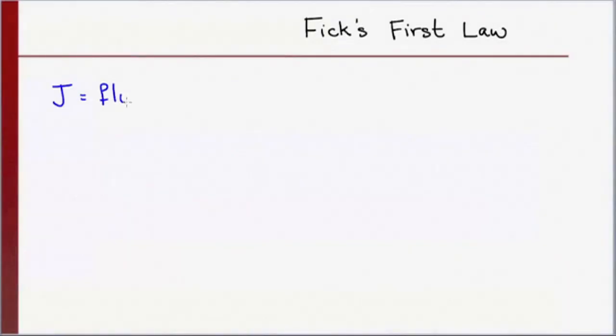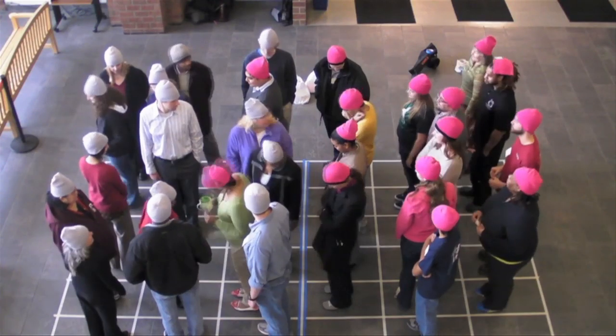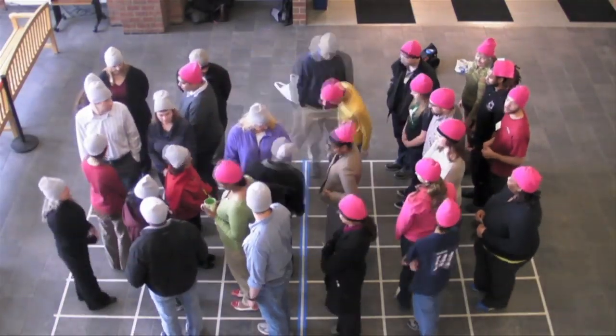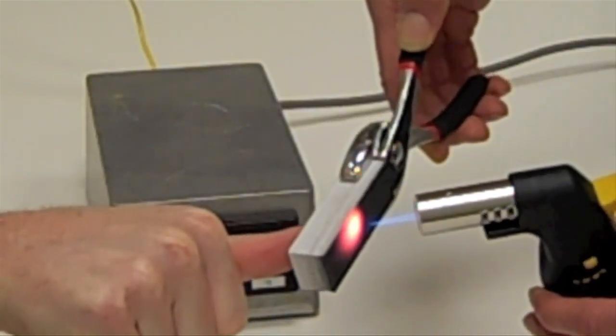Be aware that this is just one form of Fick's first law. The most general form says that flux is proportional to the negative gradient of the chemical potential. You may see the equation in this form in later courses. In all the examples that we have considered in this video, the gradient of the concentration and the gradient of the chemical potential pointed in the same direction.